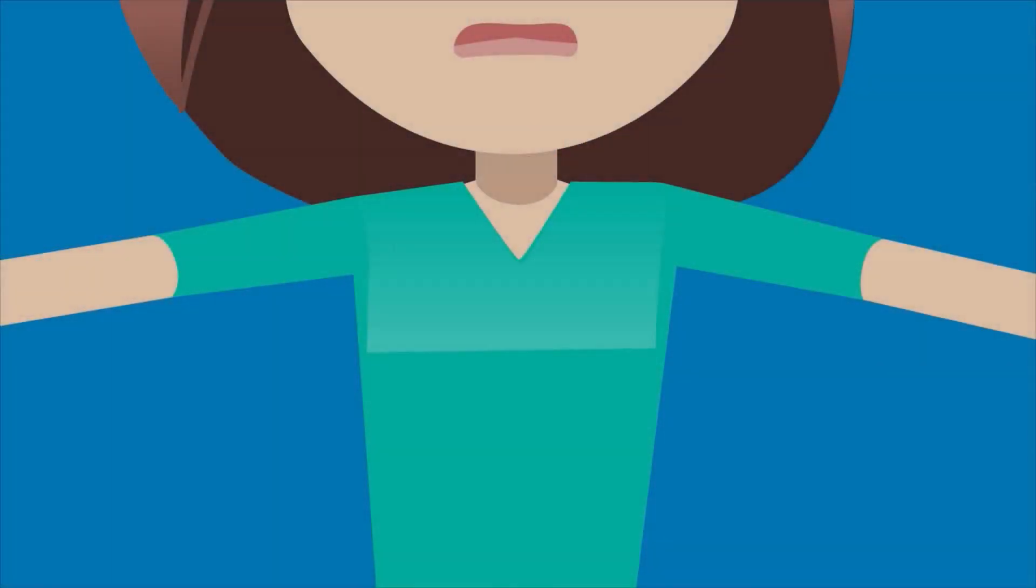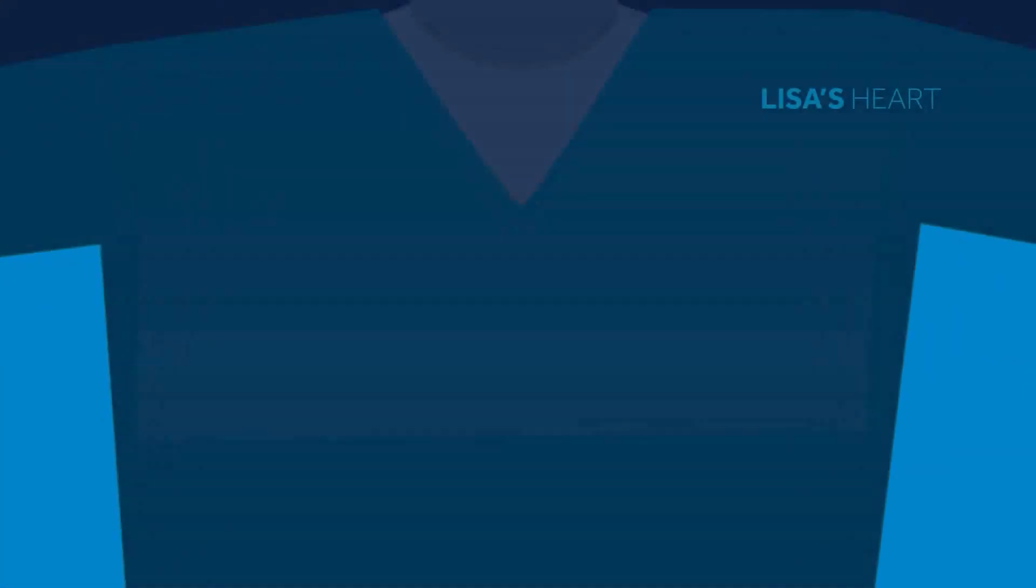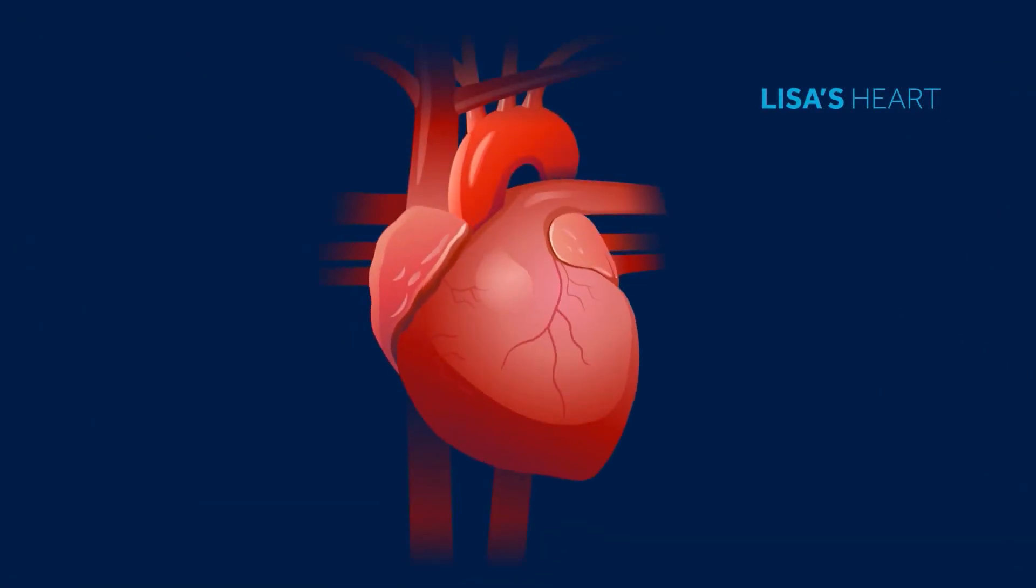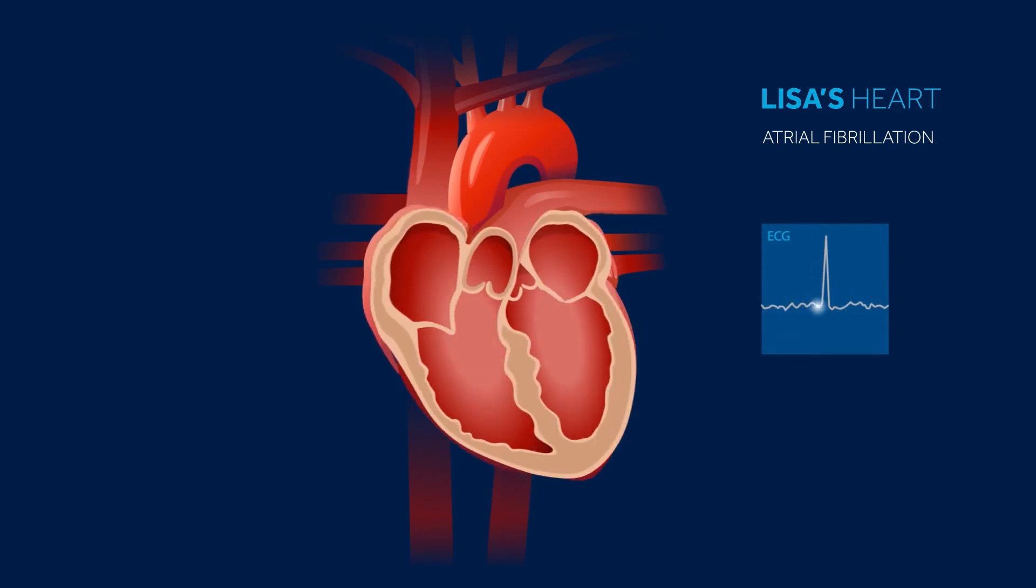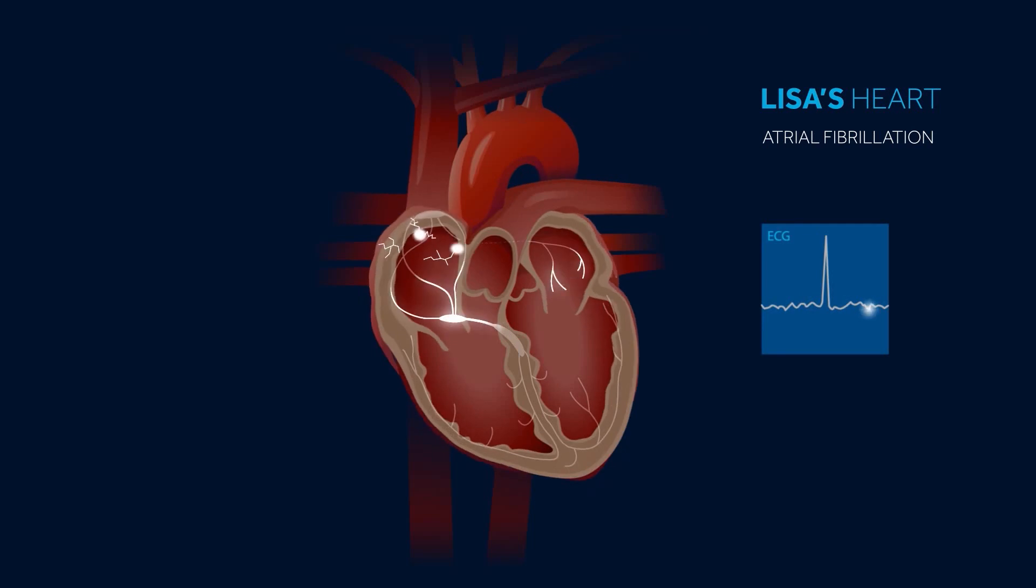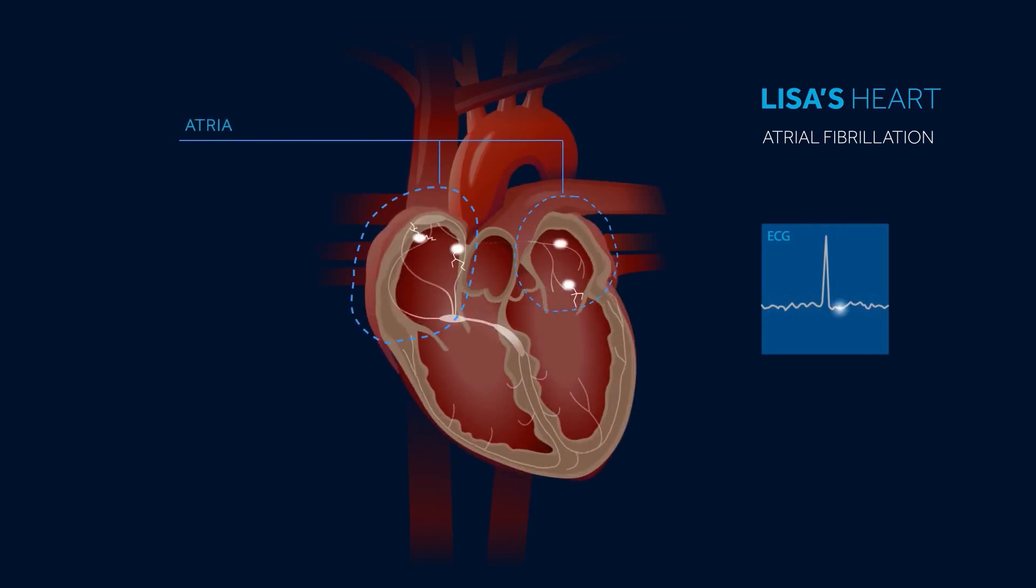But Lisa's heart is not currently in sinus rhythm. Her heart is in a rhythm called atrial fibrillation. In people with atrial fibrillation, also called AF, electrical signals are abnormal and largely chaotic. In atrial fibrillation, electrical impulses do not originate in the sinus node as in sinus rhythm. These irregular impulses can come from another part of the atrium, or more often from the pulmonary veins. These abnormal electrical signals can become rapid and disorganized.